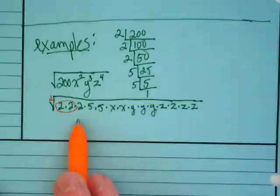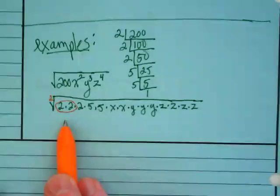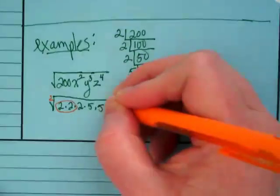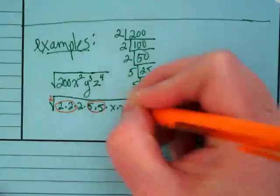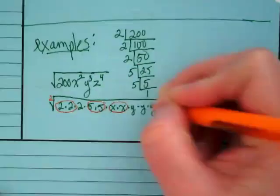I have three twos, but I can only circle two of them. How many fives? Wherever I've got groups of two, I'm going to circle them.